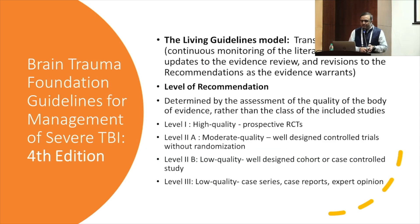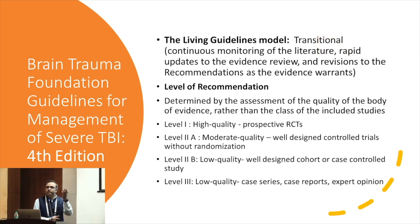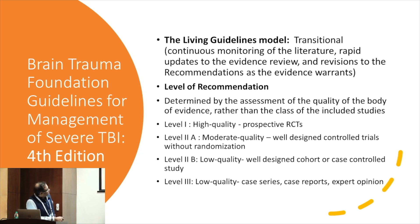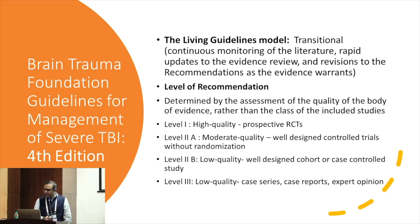These are the fourth edition of the Brain Trauma Foundation guidelines, considered a living guideline model — there won't be a fifth edition; rather, recommendations will keep updating with new evidence. There are different levels of evidence: Level 1 is high quality — highly recommended, based on prospective randomized controlled trials. Level 2A is moderate quality — well-designed trials without randomization. Level 2B is case-controlled or cohort studies. Level 3 is low quality or expert opinion. Most evidence in TBI is level 2 or level 3 — the only level 1 recommendation is: do not give steroids in TBI.